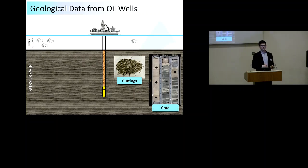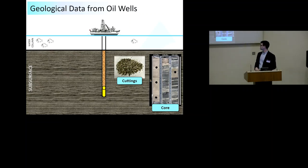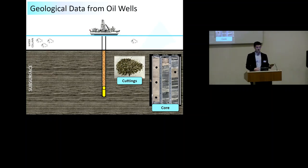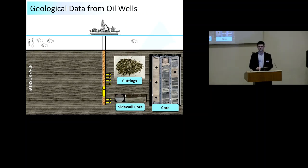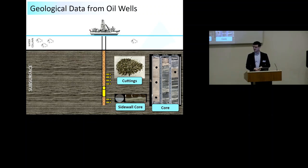Companies also sometimes take cores from oil wells - cylinders of rock that could be five metres, 60 metres, or 200 metres long, which we go and describe. They can also take sidewall cores, where a little tool is dropped down the well and either drills or blows a small section of rock out of the side, bringing it back up so we can look at the sedimentology at that interval.